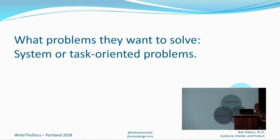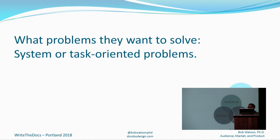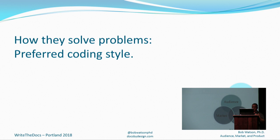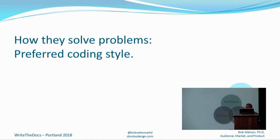What problems do they want to solve? They can be system problems — large interconnected components that all work together — or task and utility-level APIs solving smaller problems. Understand where your product is on that spectrum. Then consider how your audience solves those problems: what's their coding style? Coding style isn't the same as a persona — the coding style is how they attack the problem, and one particular persona might attack different problems in different ways.